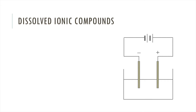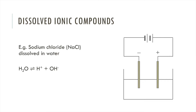Moving on to dissolved ionic compounds — we have the example of sodium chloride dissolved in water. Water partially dissociates, or we can also say it partially ionises. This means we have an equilibrium set up: on one side we have water molecules, and on the other side we have hydrogen ions (H⁺) and hydroxide ions (OH⁻). So in this situation we don't only have Na⁺ and Cl⁻ ions — we also have H⁺ and OH⁻ ions.